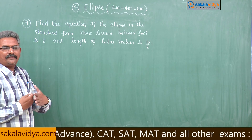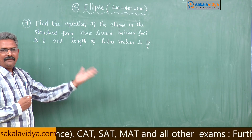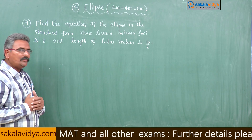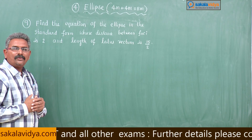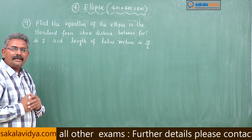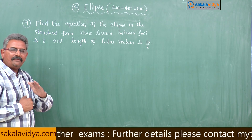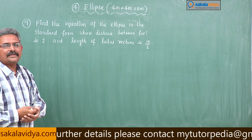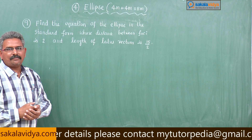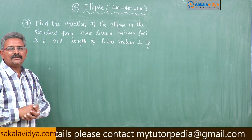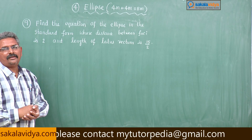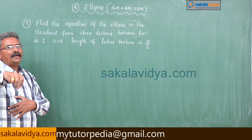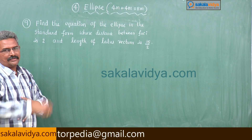With the help of the value 2b squared by a and ae value, we have to find out the a value and b value. Then we can find out x squared by a squared plus y squared by b squared is equal to 1, which is the required equation of our ellipse.